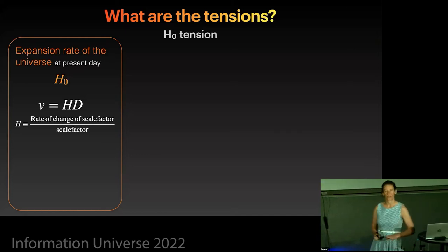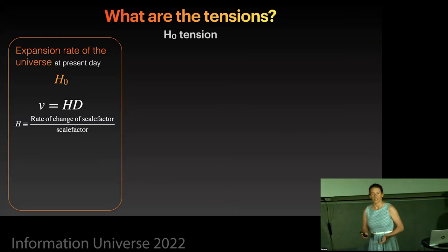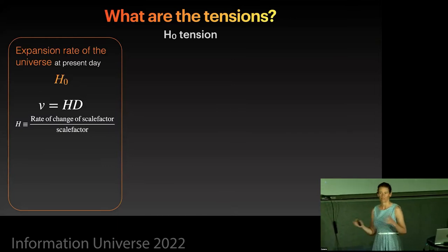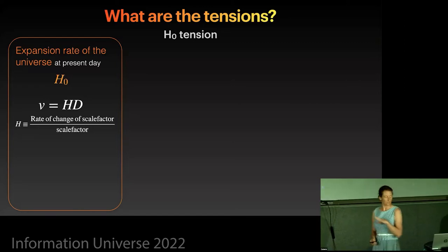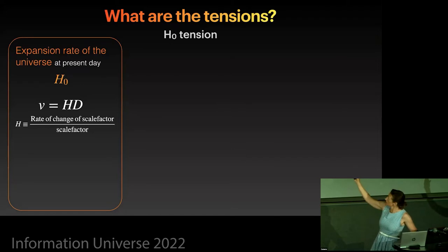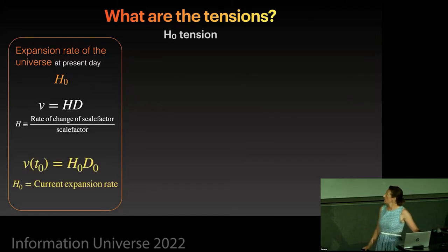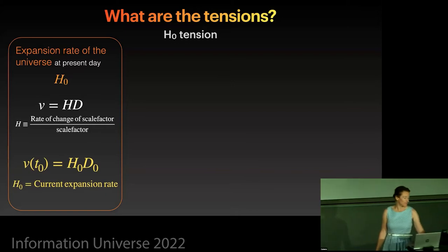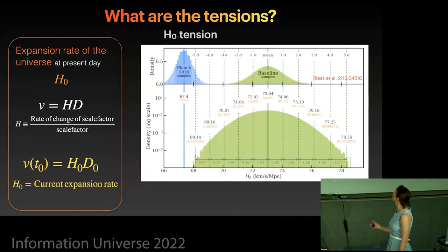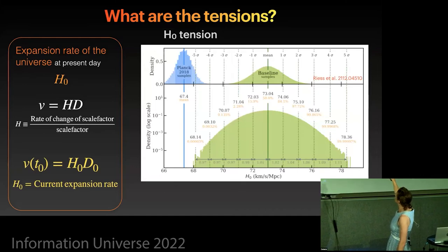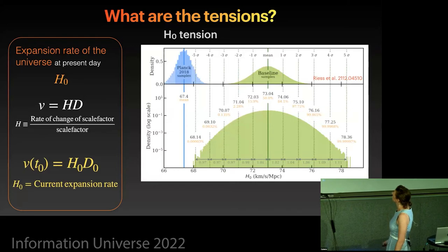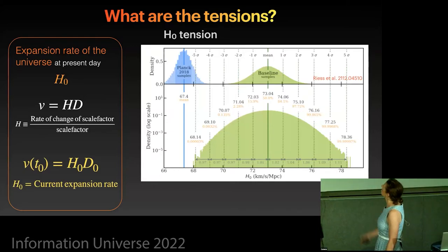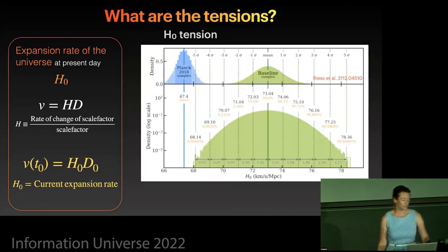We've heard a little bit about this, so I'm going to go rather quickly. But the first one is the H0 tension. So H0 is the current rate of the expansion of the universe. We have the Hubble-Lemaître law. Velocity is proportional to distance. The Hubble parameter is the proportionality factor. In general, it's the rate of change of scale factor divided by the scale factor. But if we put the present-day values in, then the scale factor today we usually define as 1. So that's the current expansion rate is H0.